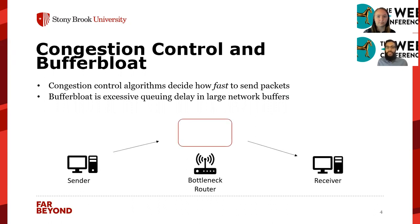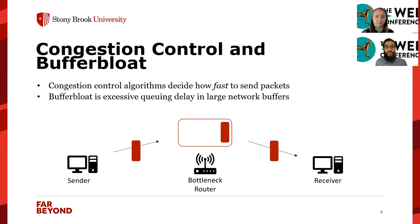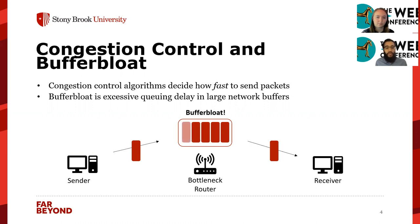Let's see an example of this. On the left-hand side we have a sender, on the right-hand side we have a receiver, and in the middle we have a bottleneck router. The sender sends packets to the receiver, and if it sends at an adequate rate, packets don't build up in the bottleneck router and there's no congestion. But if it sends too fast, the bottleneck router accumulates packets, causing high queuing delay — that's the problem with buffer bloat.